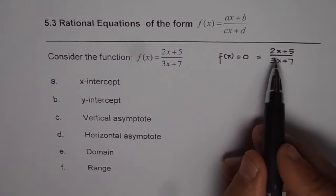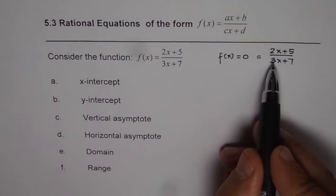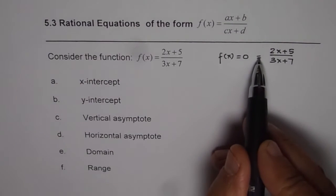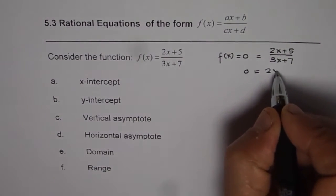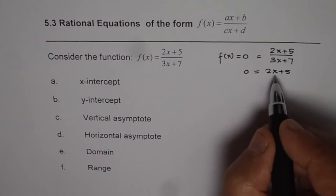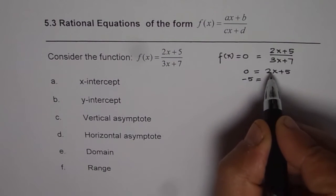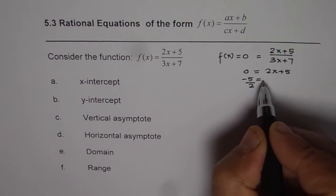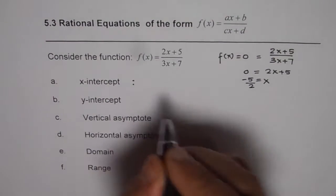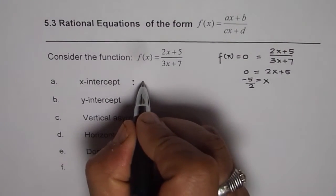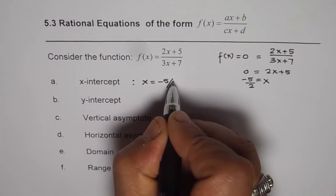Now to solve this equation, numerator should be 0. Or you can cross multiply 0 by 3x plus 7. You get 0 equals to 2x plus 5. And solve for x, we get bringing 5 here and then we have to divide by 2. That is the value of x. So we get x-intercept as x equals to minus 5 over 2.